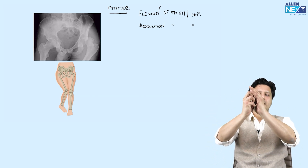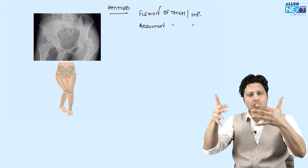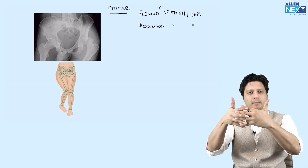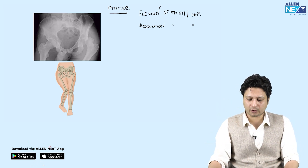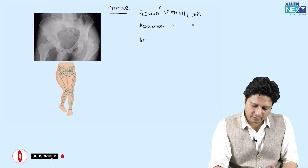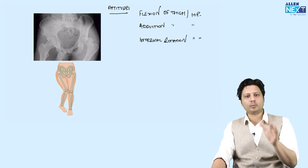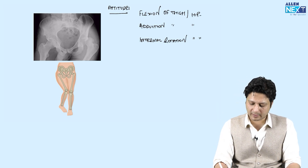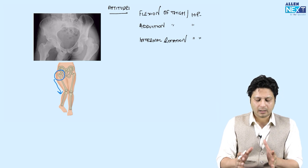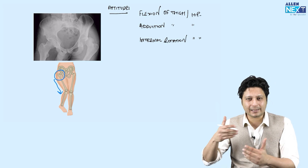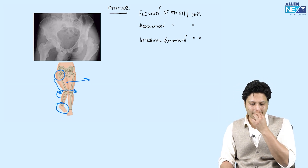So the attitude is flexion, adduction, and internal rotation of the thigh or hip. This can be easily identified clinically — the thigh is adducted, flexed, and internally rotated, which is evident from the position of the foot. Just by looking at the attitude, you can identify that the patient is suffering from posterior dislocation of the hip joint.